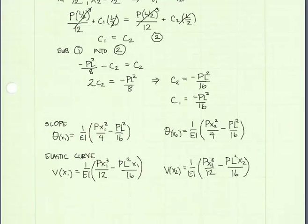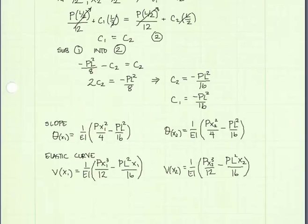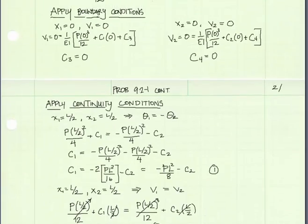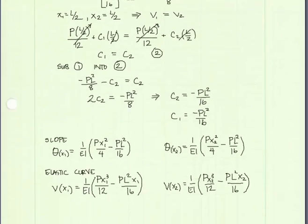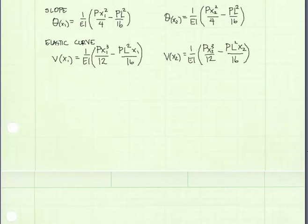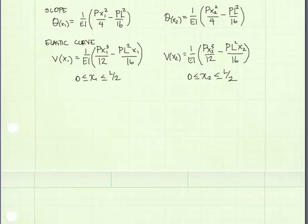Now that we have found C1 and C2, we can plug them into our slope and elastic curve equations to write the final versions of those equations. The equations on the left represent the left half of the beam; the equations on the right represent the right half. Because we have a symmetrically loaded beam, it's no surprise that the two equations are identical given the way we've drawn the axes.